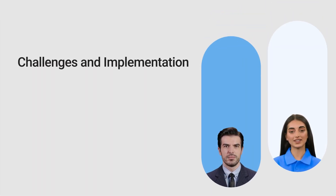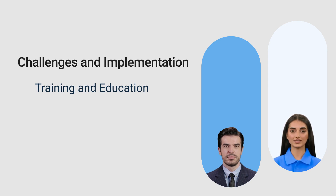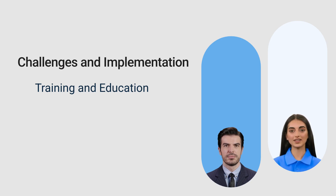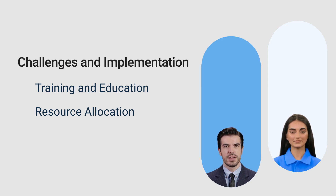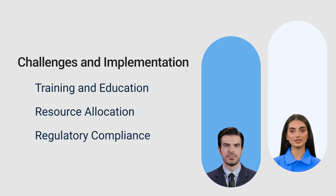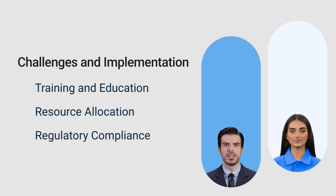Implementing the new E6 R3 guidelines will come with its challenges. Training and education are crucial to ensure that all stakeholders understand and can apply the new guidelines effectively. This involves developing comprehensive training programs for investigators, sponsors, and ethics committees. These programs should cover the updated principles, new technologies, and enhanced quality and ethical standards. Another significant challenge is resource allocation. Ensuring there are adequate resources to support the changes, from technology to personnel, is essential for successful implementation. This includes investing in new technologies, hiring additional staff, and ensuring that existing staff are adequately trained. Regulatory compliance must also be maintained. Staying up to date with the latest regulations and ensuring that all trial processes meet these standards is critical. This involves regular audits, compliance checks, and staying informed about changes in regulatory requirements.